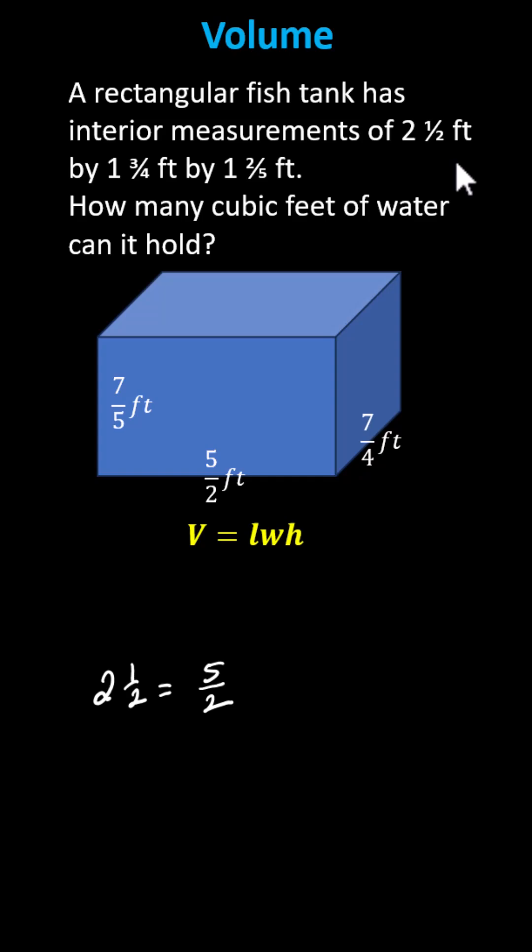Now that we have the dimensions as improper fractions, we can determine the volume where the volume is equal to length times width times height. So in our case the volume V is equal to five halves feet times seven fourths feet times seven fifths feet.